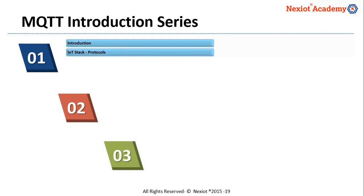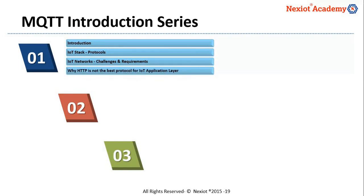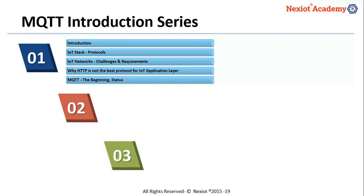In the first part of the series, we'll start by looking into the IoT stack and different protocols involved, focusing on challenges and requirements for IoT networks. We'll understand what constrained devices are and why HTTP is not the best protocol for the IoT application layer. We'll also understand the interesting context which led to the creation of the MQTT protocol by two engineers from IBM and Eurotech, and then have a look at the status of MQTT today.